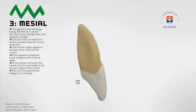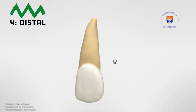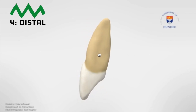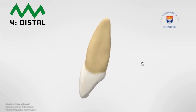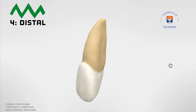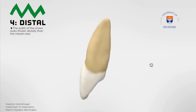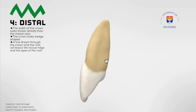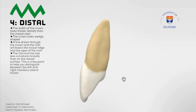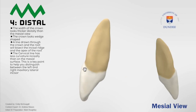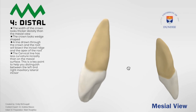A line drawn through the center of the root bisects the incisal ridge of the crown, and the overall shape fits into the geometric shape of a triangle. Number four, we're looking at the distal viewing aspect. From this direction, we can observe the portion of the tooth furthest from the midline of the face. The width of the crown looks thicker in the distal view than in the mesial view, and the crown looks wedge-shaped. A line drawn through the crown and root will bisect the incisal ridge and the apex. The cervical line has less curvature incisally than on the mesial surface — this is a key point to help distinguish between the left and right maxillary lateral incisor.